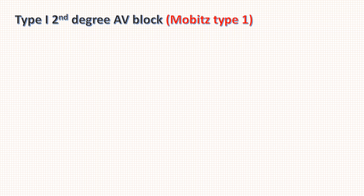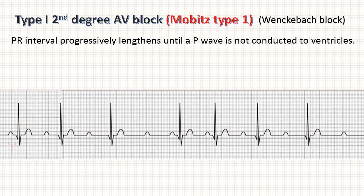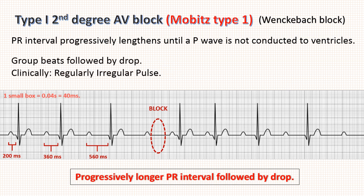Type 1 2nd degree AV block is also known as Wenckebach block. Here the PR interval progressively lengthens until a P wave is not conducted to the ventricles — that is, until there is a block. Looking at this ECG: the first PR interval is around 5 small boxes (approximately 200ms), next is 9 small boxes (360ms), then 14 small boxes (560ms), which is followed by a blocked or missed QRS complex. The keywords are progressively longer PR interval followed by a drop. In Type 1 2nd degree AV block you will see group beats followed by a drop, so clinically the pulse will be regularly irregular.